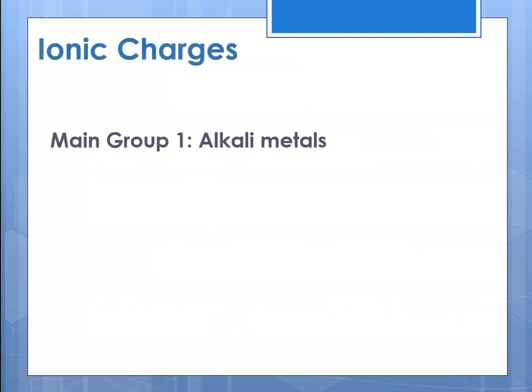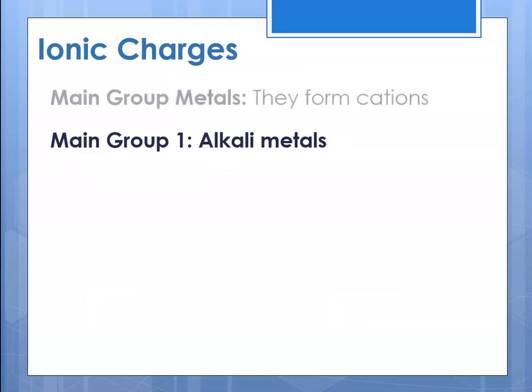So how do we figure out ionic charges? For the main group elements, it's really easy for the main group metals — their charge is whatever group number they are in with a plus sign. So if you are in main group one, the alkali metals, your charge would be plus one. Lithium, sodium, potassium, and so forth all have a charge of plus one.